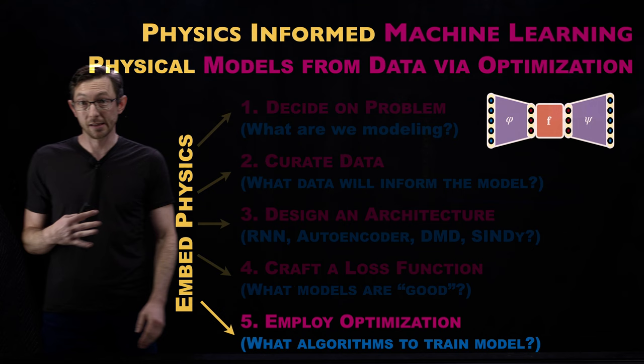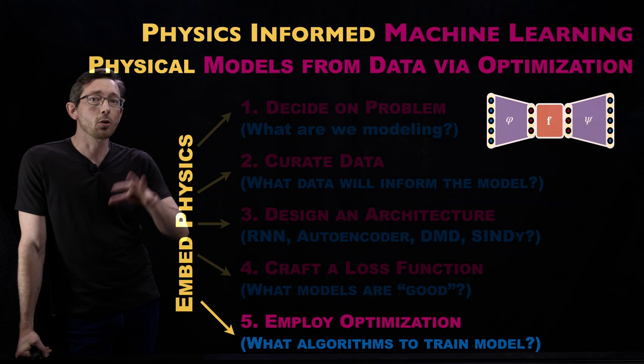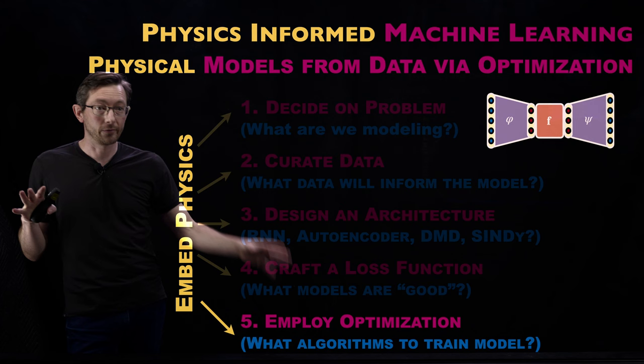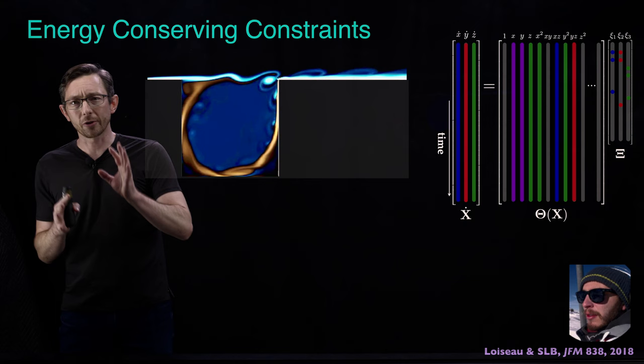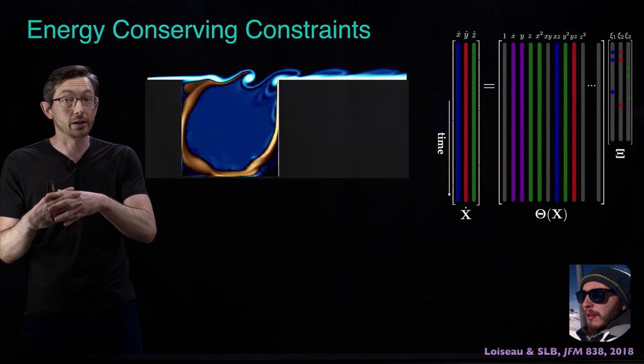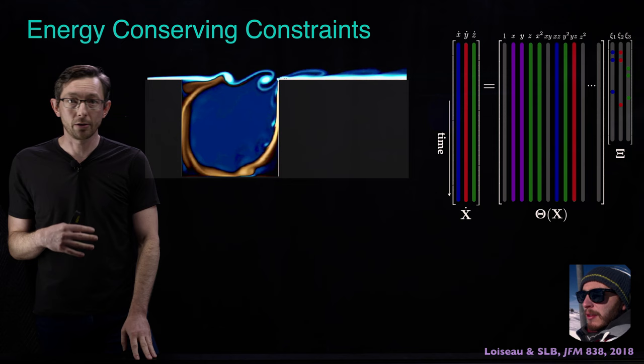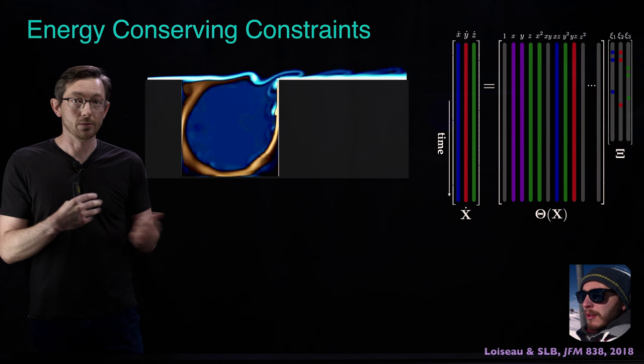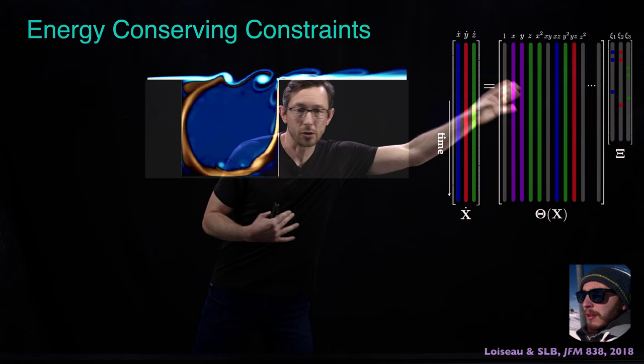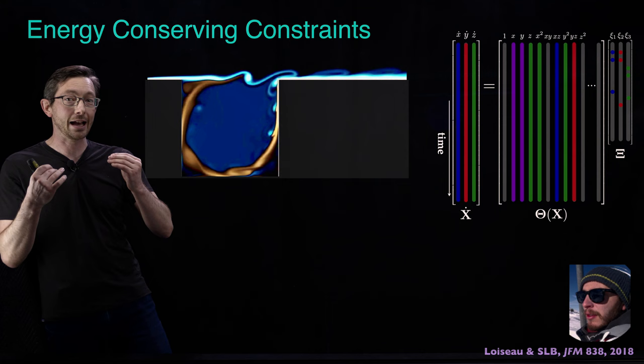This is just an overview — we're going to have more in-depth follow-on lectures. This is the high-level overview of the optimization stage. The first example I want to give is my first introduction to how you can marry machine learning with physics constraints and constrained optimization. This is work by Jean-Christophe Loiseau in Paris. We started collaborating a while ago, back when he was a postdoc at KTH, and he reached out to me about this SINDy sparse model identification procedure.